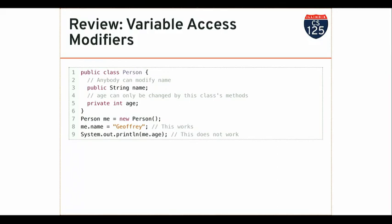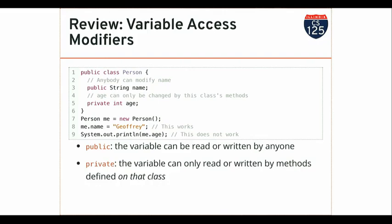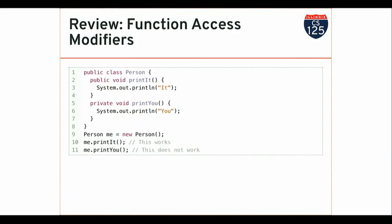I can also apply these same visibility modifiers to functions, and they work roughly the same way. A public function can be called by anybody. A private function can only be called by other methods or functions defined on that class. So if I have an instance of person, I can call printIt because it's marked public. I can't call printU because it's marked private. This is a way to define helper methods on your class that are used internally but that you don't want to expose to the outside world.